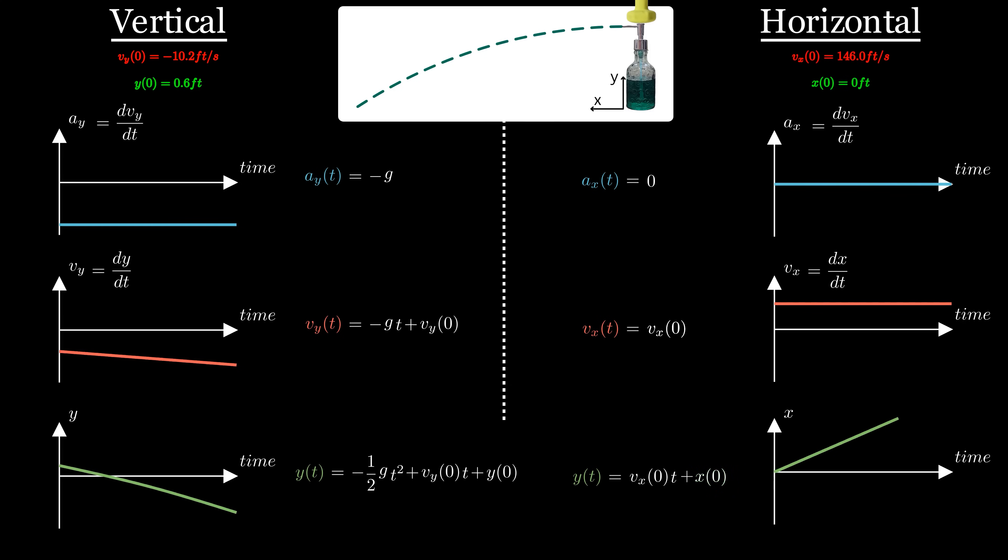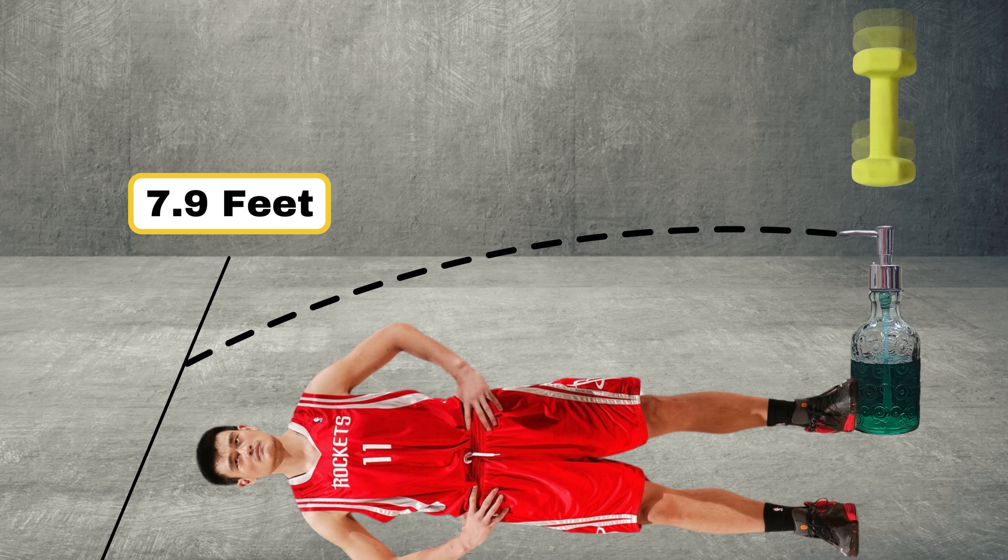Now, going back to the vertical position graph, you can see that the soap will hit the floor 0.54 seconds after launch, and if the soap travels in the air for 0.54 seconds, it will reach a horizontal distance of 7.9 feet. And that's how the line was set.